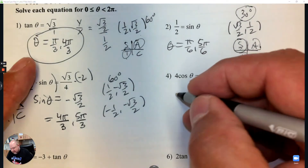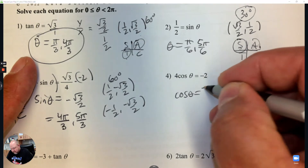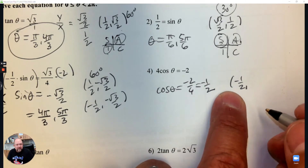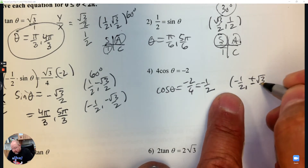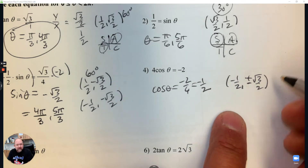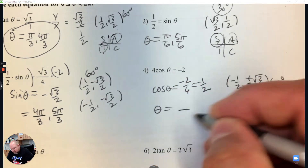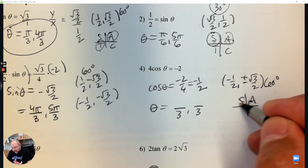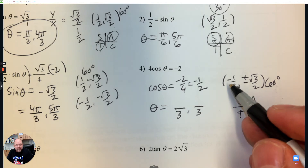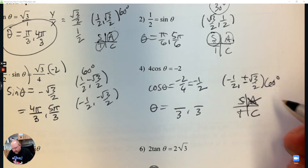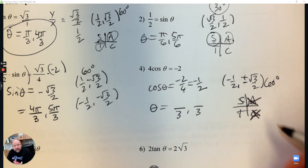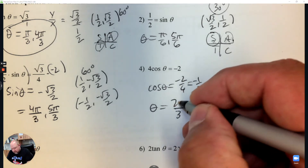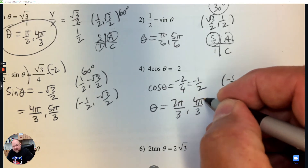Number 4: to get cosine theta by itself, divide. When I divide and simplify, I get negative 1/2. So the x-coordinate is negative 1/2, and the y-coordinate could be positive or negative root 3 over 2. The reference angle — both of these angles are over 3 for radians. Where is the x-coordinate negative? So cosine is not positive here or here. The quadrants we're looking at are 2 and 3.